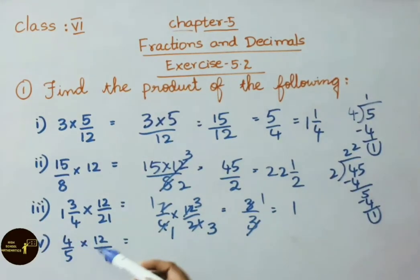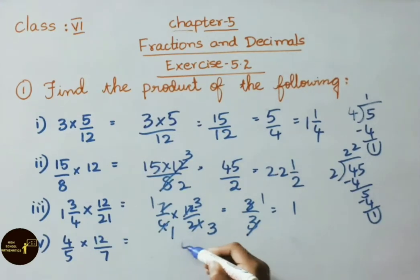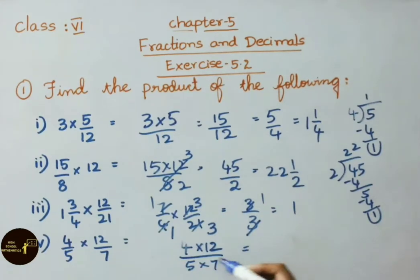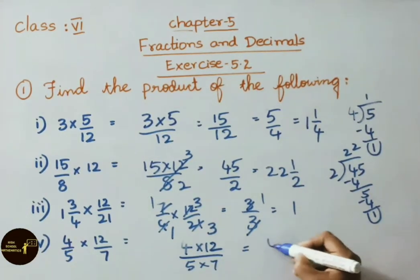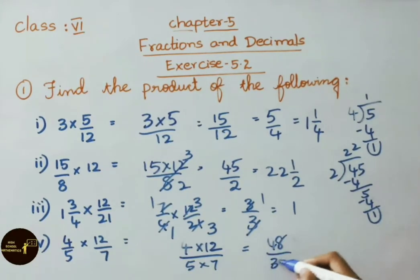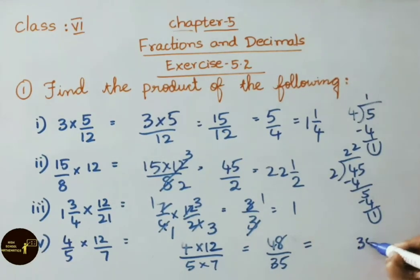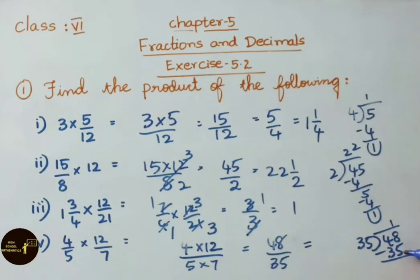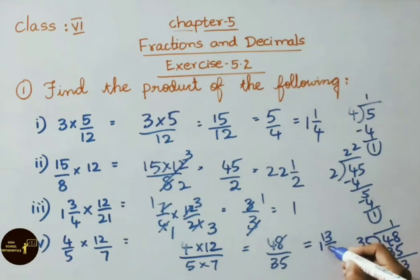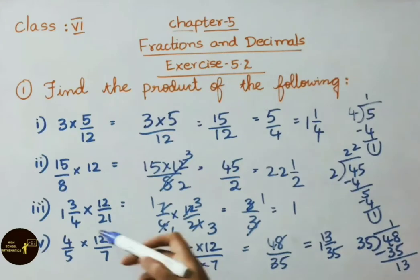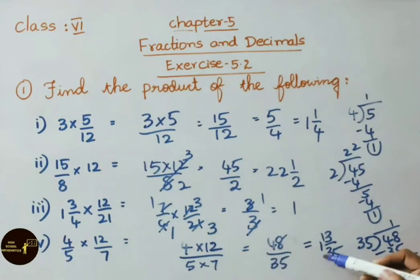The fourth sum is 4 by 5 into 12 by 7. Multiply the numerators and denominators separately: 4 into 12 by 5 into 7. That gives 48 by 35. Simplifying by division: 35 ones are 35, 48 minus 35 is 13. So the answer is 1 and 13 by 35. Therefore, 4 by 5 into 12 by 7 equals 1 and 13 by 35.